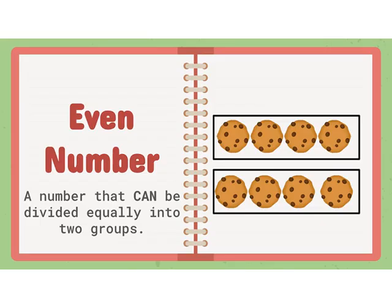First of all, let's look at what an even number is. An even number is a number that can be divided equally into two groups. You'll notice on the right-hand side there are cookies in two groups — four cookies in each group. If I count the cookies in all I get one, two, three, four, five, six, seven, eight cookies in all. So I know that eight can be called an even number because I can split eight cookies into two equal groups of four.